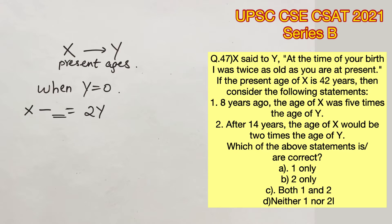The present age of X is said to be 42. Now this place has to be occupied by the present age of Y because this is when Y was 0. So only when you subtract the present age of Y, you would get the age of X at that time.